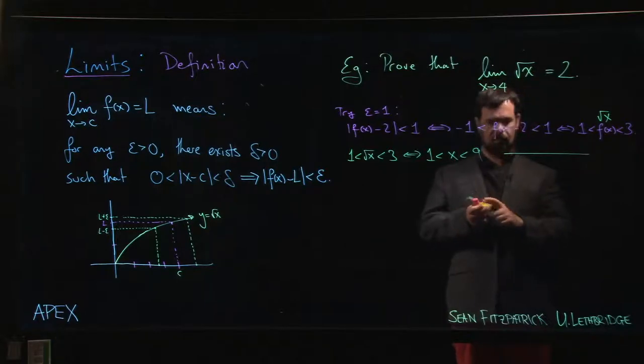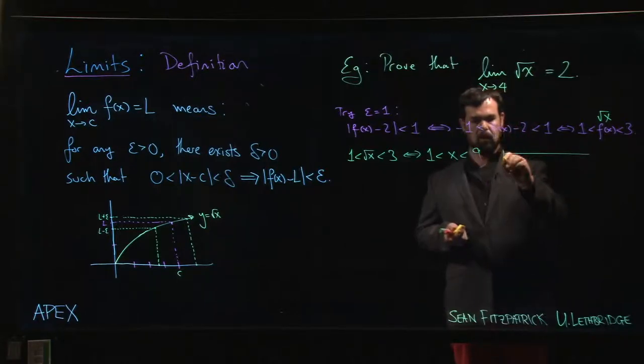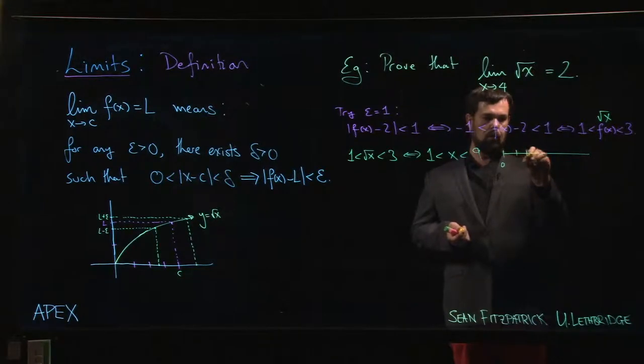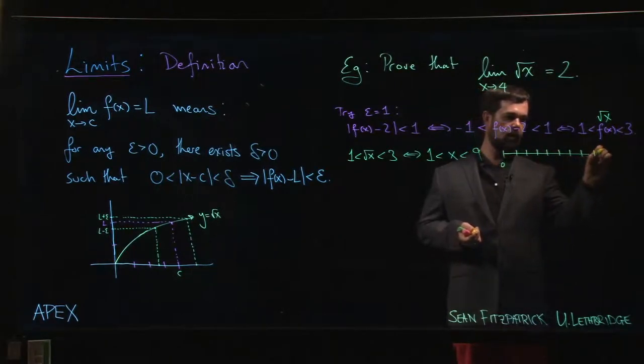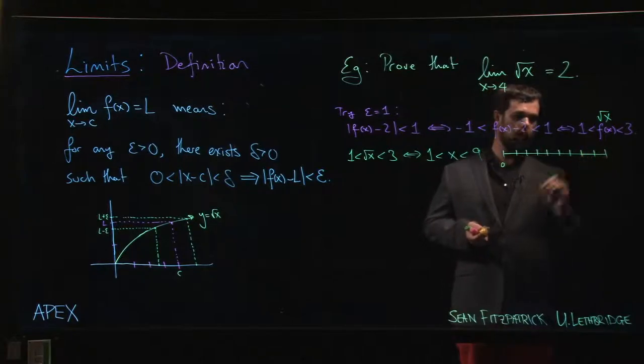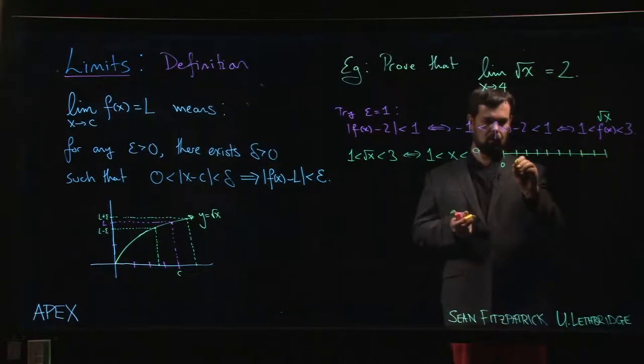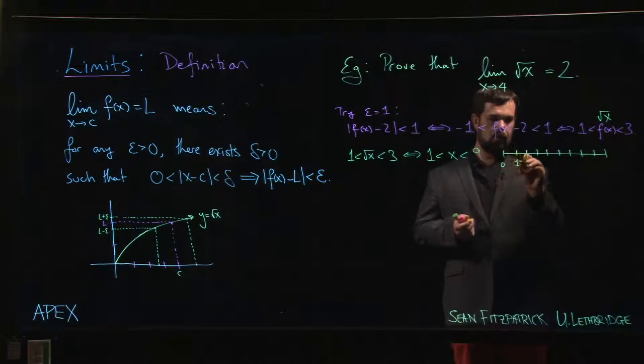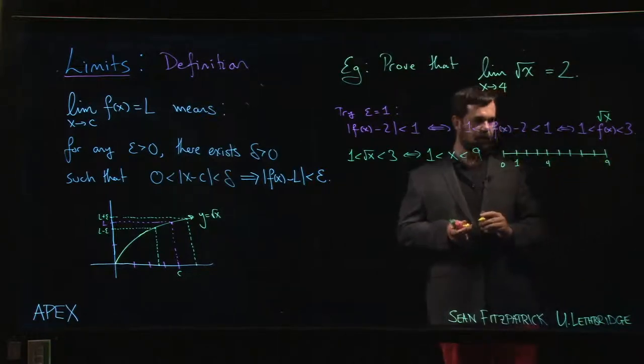So here's our number line starting, let's say, zero, three, four, five, six, seven, eight, nine, going up to nine. Here's one, two, three, here's four, over here is nine.